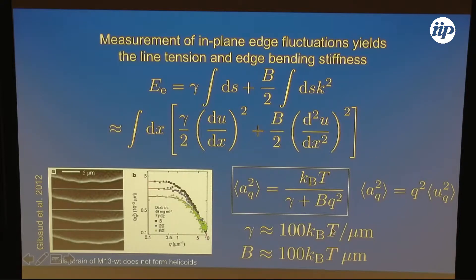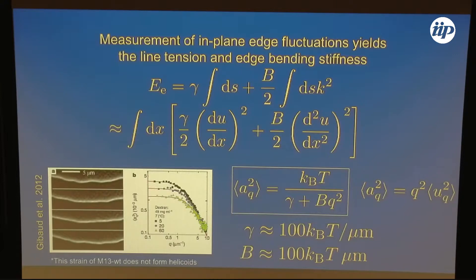Roughly, these quantities come out to be about 100 k_B T microns for the bend stiffness and 100 k_B T per micron for the line tension — for this particular strain. I'll show another strain later where the line tension is bigger. And that's the case where the line tension dominates.